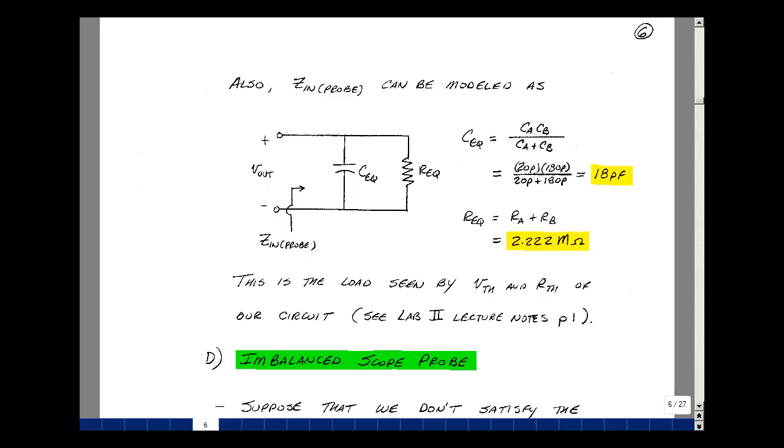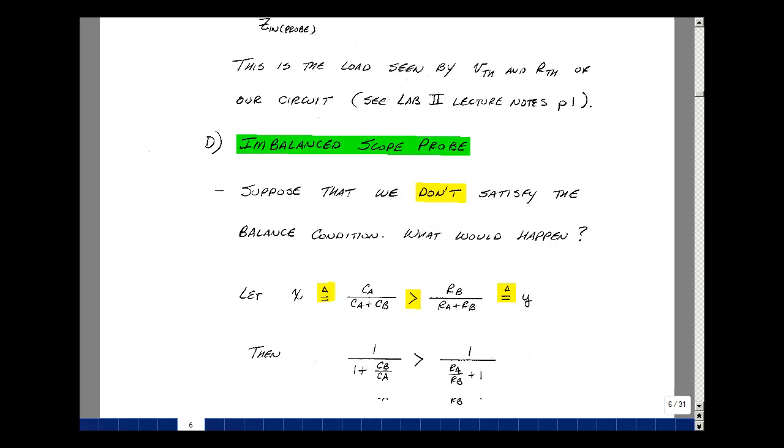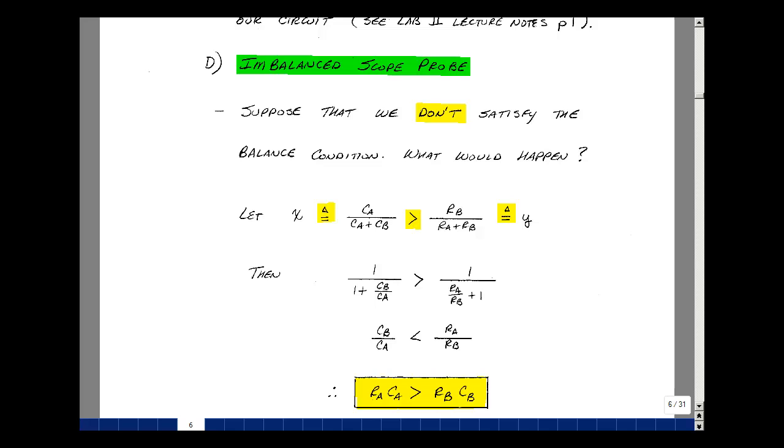Now what happens if the probe is not balanced properly? We'll see shortly that this distorts the waveform. So we can do a quick test to see whether our scope probe is balanced properly by just measuring a test signal. So let's do the following.